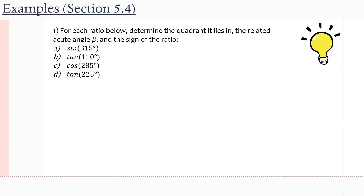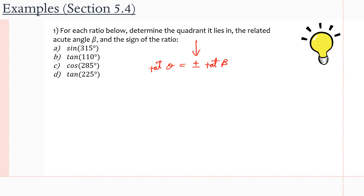We have number one here. It says for each ratio below, determine the quadrant it lies in — so determine where the terminal arm is of this angle — the related acute angle beta, and the sign of the ratio. We need to find first the quadrant it lies in by drawing the angle in our Cartesian plane, then the related acute angle is the angle the terminal arm makes with the x-axis, and finally use the CAST rule to find the sign, since any ratio equals plus or minus the ratio of beta.